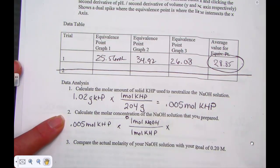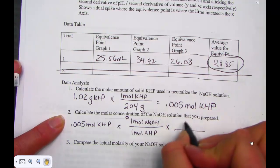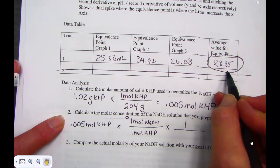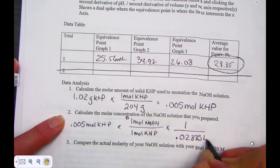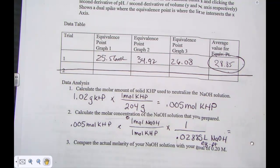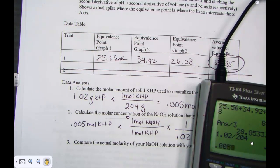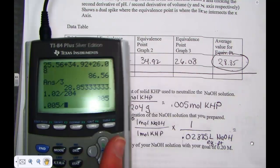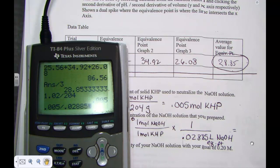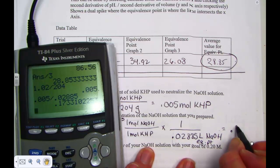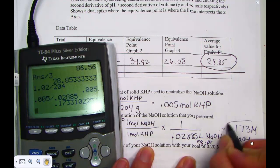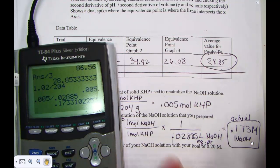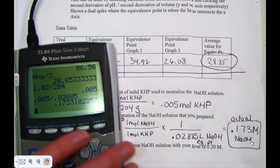Knowing that molarity is defined as moles per liter, I'm going to put the average value for the equivalence point down below in a liter. 0.02885 liters of NaOH at the equivalence point, and process that. 0.005 times 1 over 1 divided by 0.02885, your average value. And mine came up 0.1733 molar. This is my actual molarity that we solved for during the process of titration.